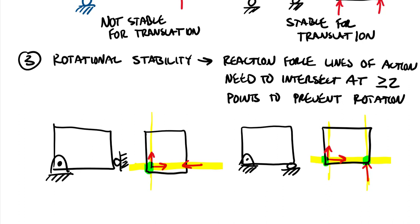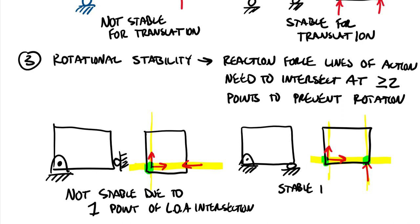So I often think about in the context of Animal Farm, right, the classic dystopian book that in this case, two is good and one is bad. So one point of intersection. So this is not stable due to one point of line of action intersection. And this is stable in rotation with two points of line of action intersection.